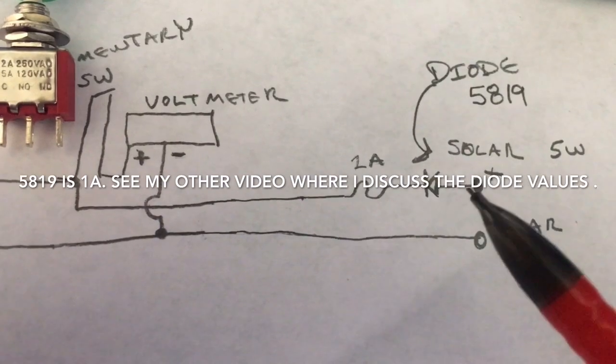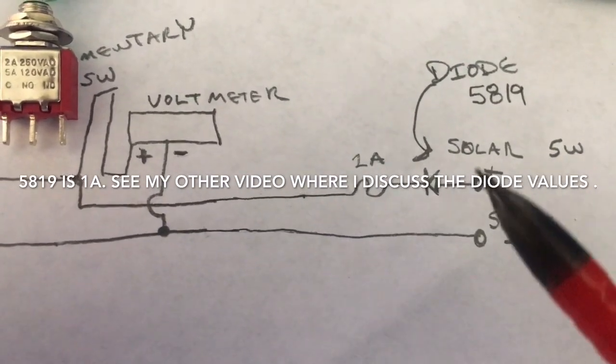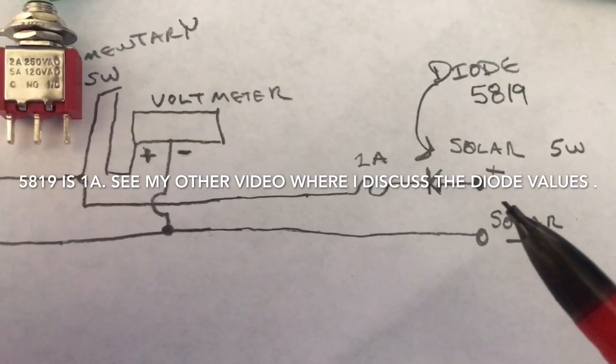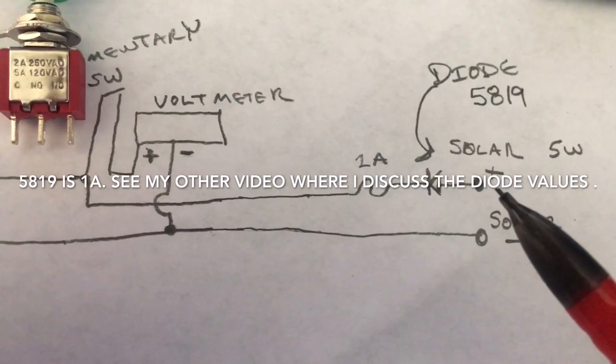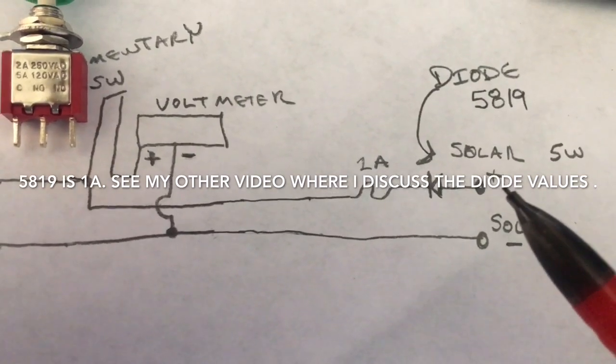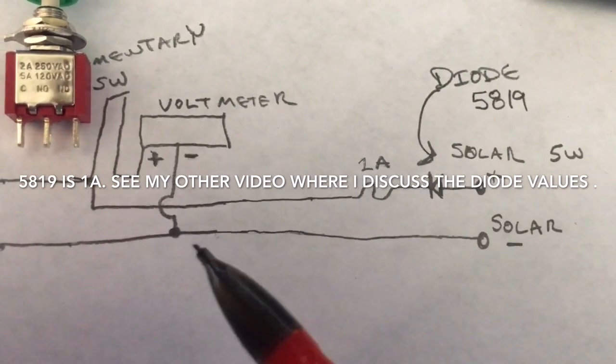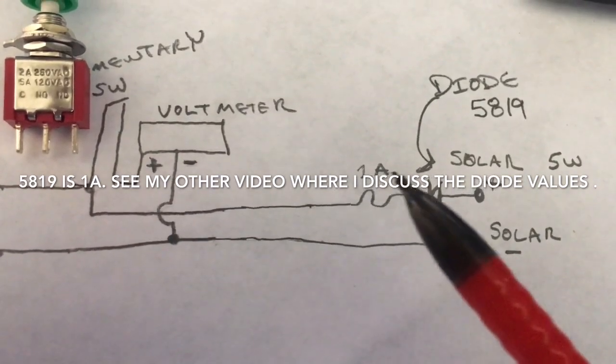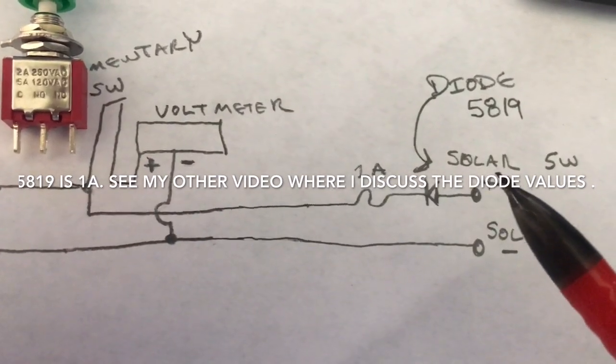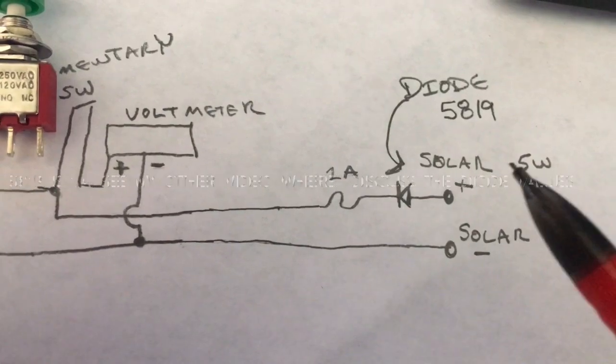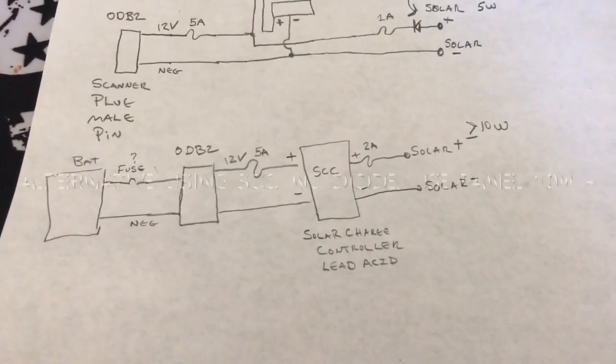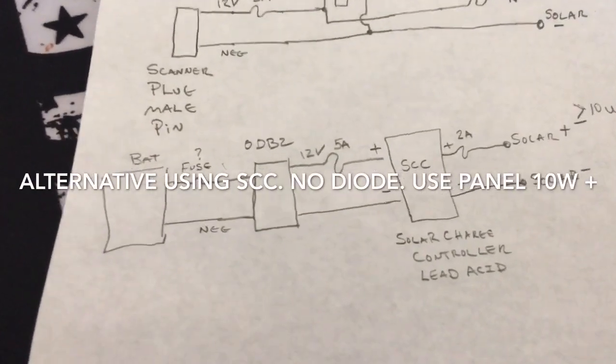Then there's a diode with a value of 5819 that you want to put in there to keep the solar panel from, so it can only charge the battery. The battery can't take energy and put it back to the solar panel and waste your battery and lower your battery.